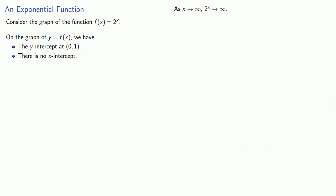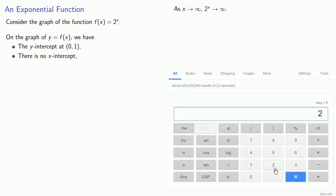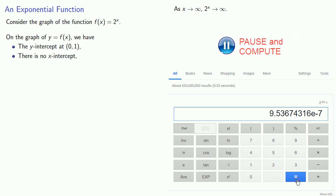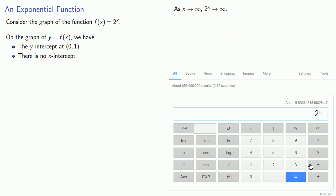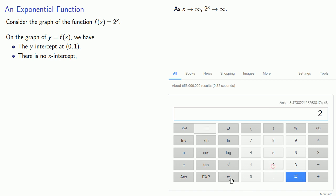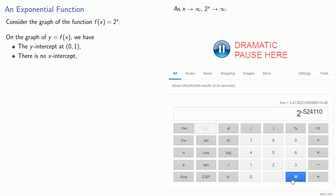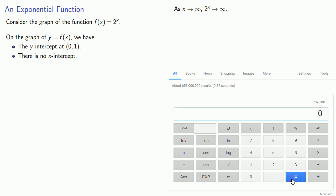How about in the other direction? If x equals negative 20, then 2 to the negative 20 is very small. And 2 to the power of negative 157 is even smaller. If we take even more negative powers of x, we see that 2 to the power of x goes to 0. So as x goes to minus infinity, 2 to the power of x goes to 0.